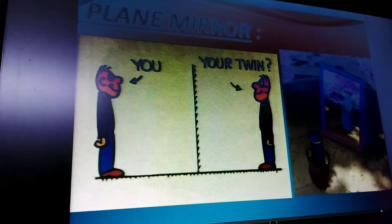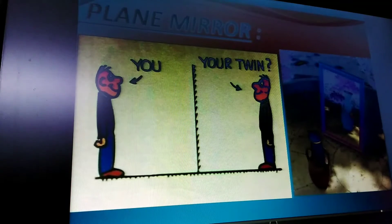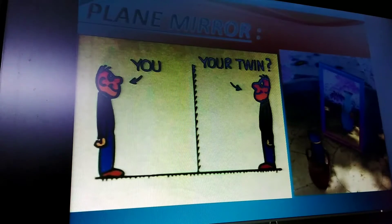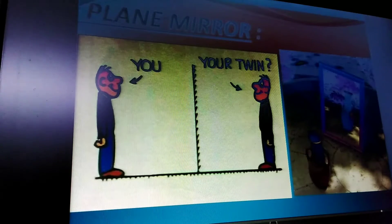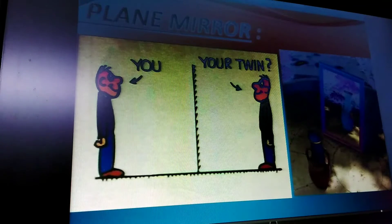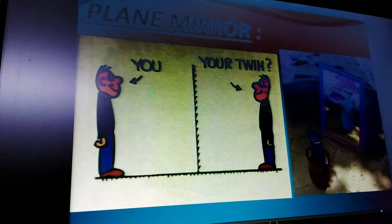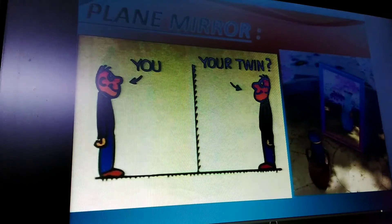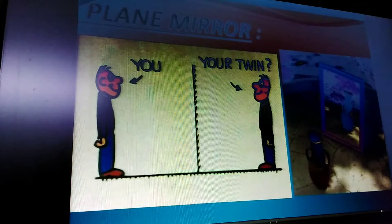In a plane mirror, the size of the object equals the size of the image. The image is laterally inverted and equidistant from the mirror. Plane mirrors always form virtual, erect images.